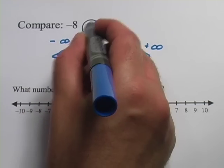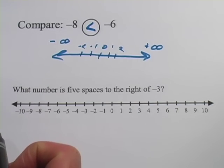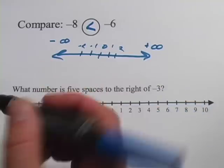So in this case, negative 8 is less than negative 6, because it's in that direction on the number line.